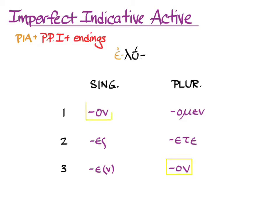Notice that the third person plural and the first person singular have the same ending, so you'll need to use context to decide how to translate. Also notice that the first person plural and the second person plural are exactly the same endings that you already know from the present indicative active. So the difference will be the augment. Also familiar is the sigma at the end of the second person singular.